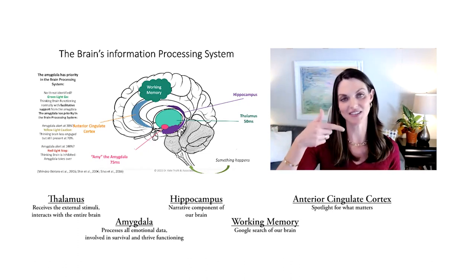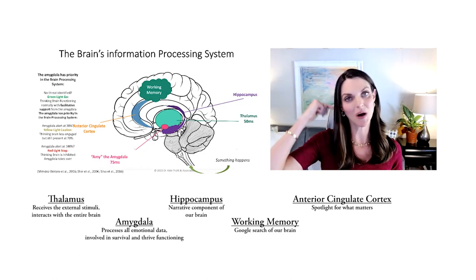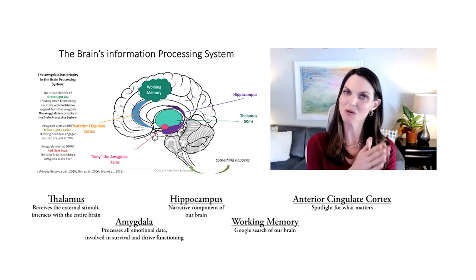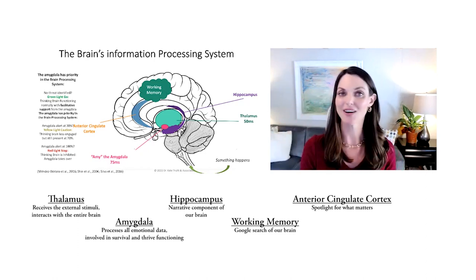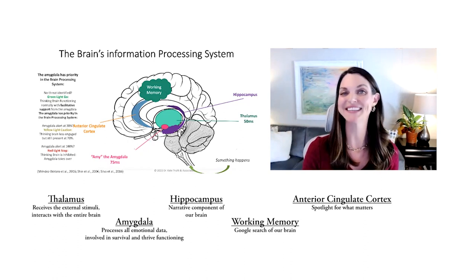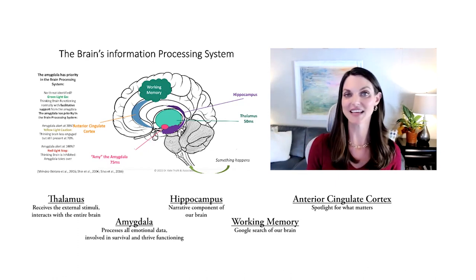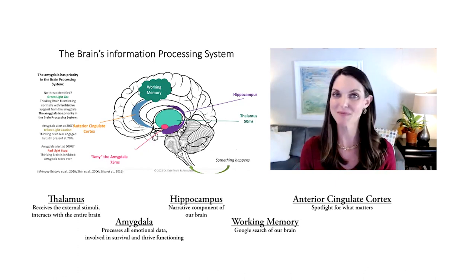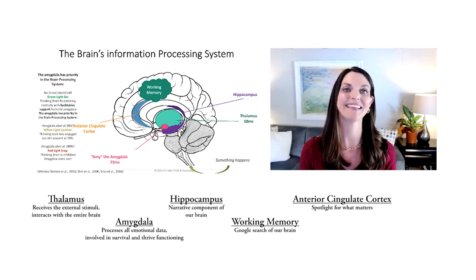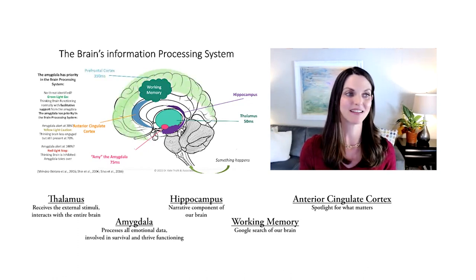That's this anterior cingulate gyrus - it's kind of like a mohawk through our brain that says, 'This is what we're going to pay attention to.' It also plays a big role in attachment and safety. Isn't that cool? So for feeling safe and loved and connected to somebody, our little brain's going to highlight that.